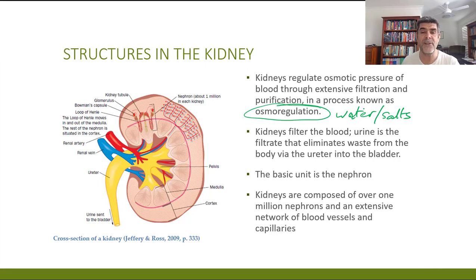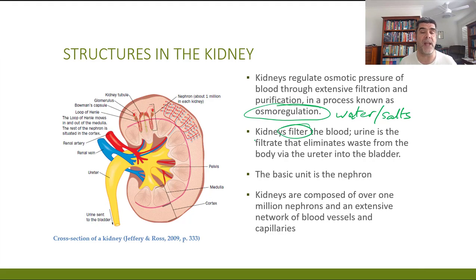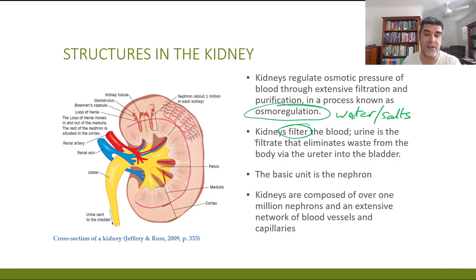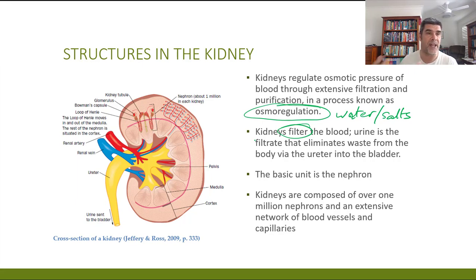The kidneys' primary function is to filter the blood. The urine produced as a result is really just what's left over once we've taken all of the other things we want out — it is eliminated through the ureter into the bladder and then out through the urethra.